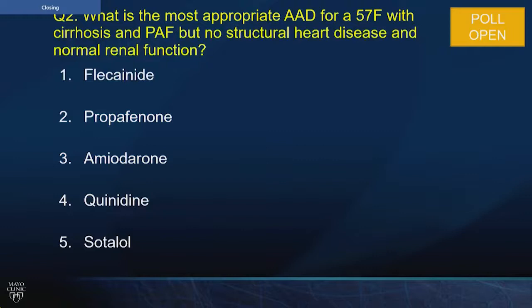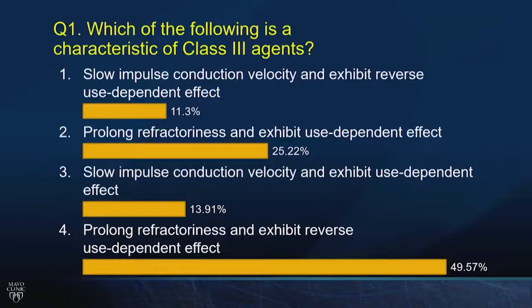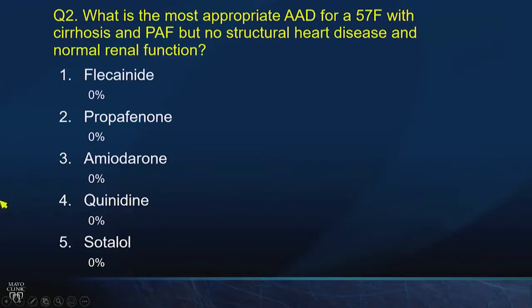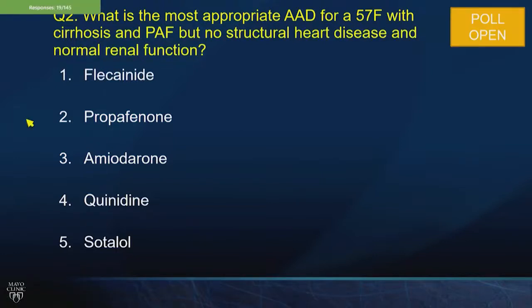What is the most appropriate antiarrhythmic drug for a 57-year-old female with cirrhosis and paroxysmal AFib, but no structural heart disease and normal renal function? So: most appropriate antiarrhythmic drug, 57-year-old female, cirrhosis, paroxysmal AFib, no structural heart disease, normal renal function.